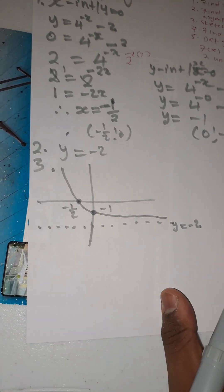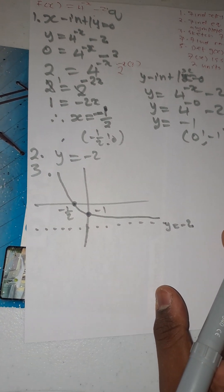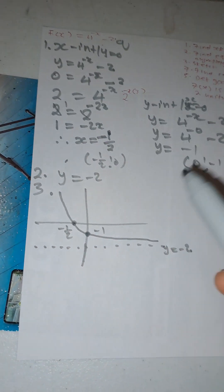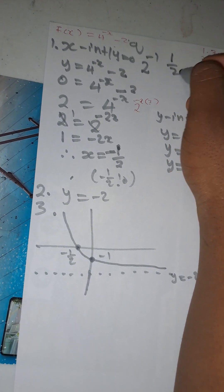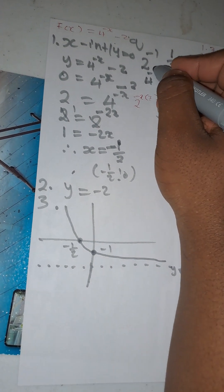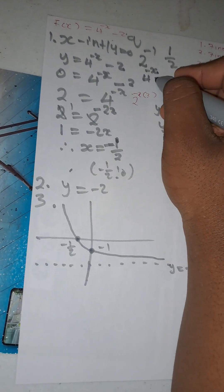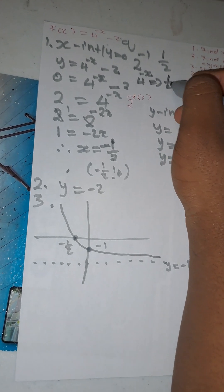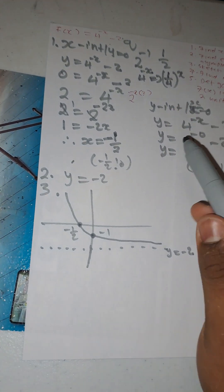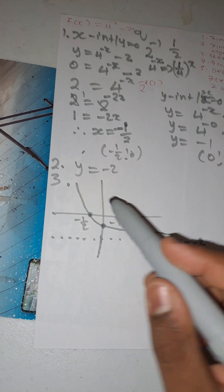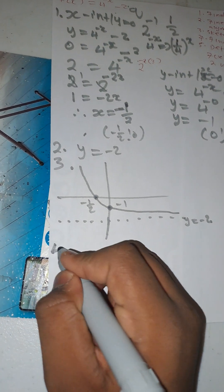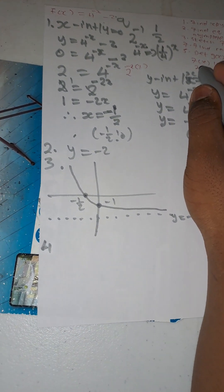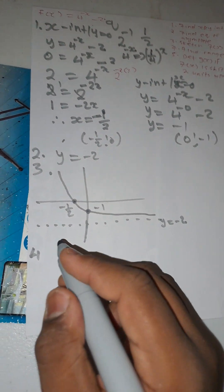Note that 4^(-x) can be rewritten as (1/4)^x — because 4^(-1) = 1/4 — and 1/4 is between zero and one. This confirms it is a decreasing function.